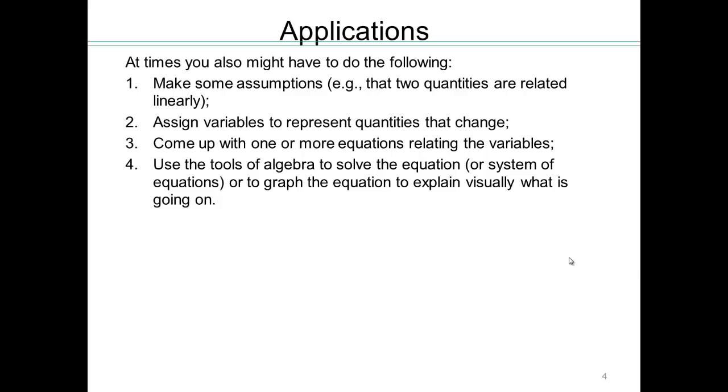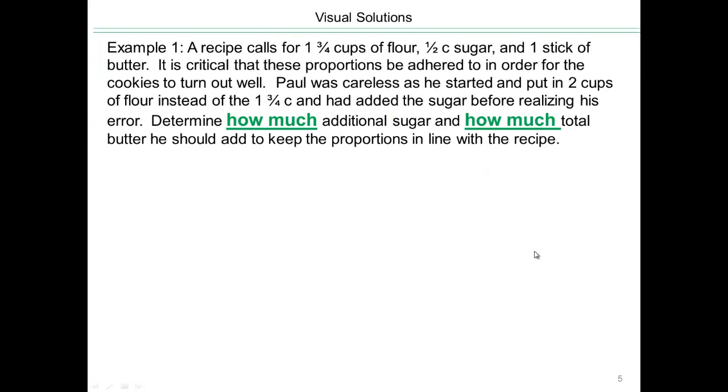Let's start with this problem. Recipe calls for one and three quarters cups of flour, half a cup of sugar, one stick of butter. It's critical that these proportions are met so that your cookies turn out well. Paul was careless as he started and put two cups of flour instead of one and three quarters cup and had added the sugar before realizing his error. So determine how much additional sugar and how much total butter he should use so that his cookies will turn out well.